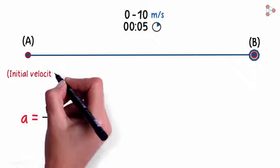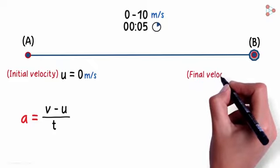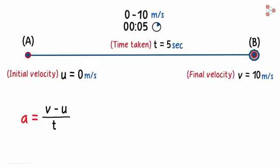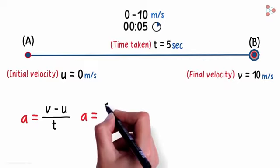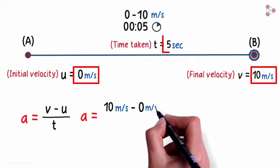The initial velocity u is 0 meters per second as the object is stationary. The final velocity v is 10 meters per second and the time taken t is 5 seconds. Hence the acceleration a will equal 10 meters per second minus 0 meters per second divided by 5 seconds.